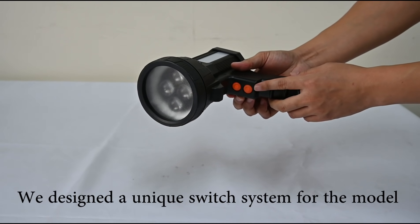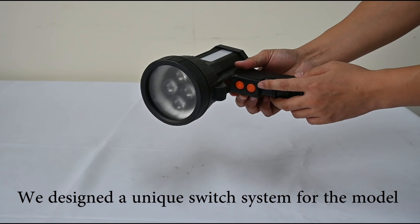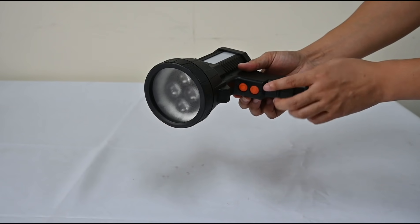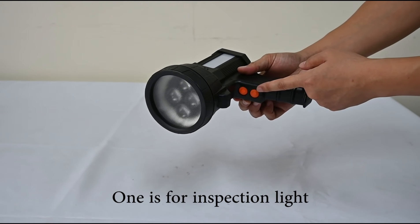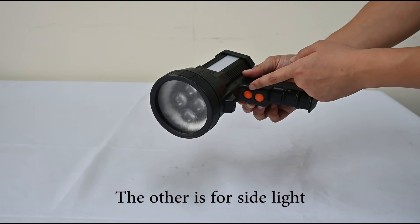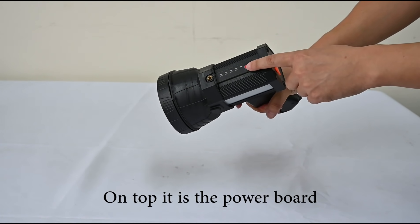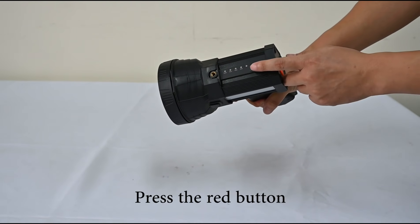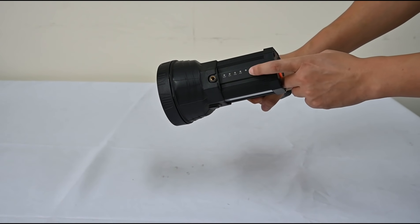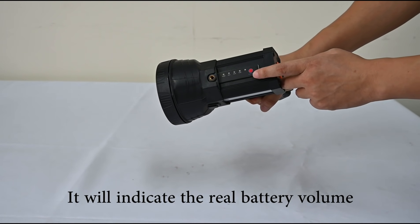And we designed a unique switch system for the light motor. One is for inspection light. The other is for satellite. And on top is the power board. Press the red button. It will indicate the real battery volume.